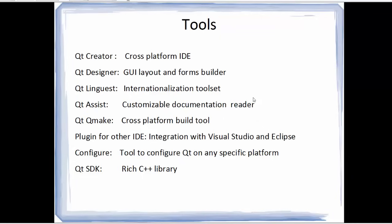Now what are the tools you get when you download Qt? Qt comes with its IDE called Qt Creator, which is a cross-platform IDE — IDE stands for Integrated Development Environment. Along with Qt Creator you get a Designer for designing your Qt GUI application. There is also Qt Linguist, which helps you to localize your application — for example, if you want to use multiple languages in your Qt application. Qt also comes with Qt Assistant, which is a customizable documentation reader, also part of the Qt Creator IDE.